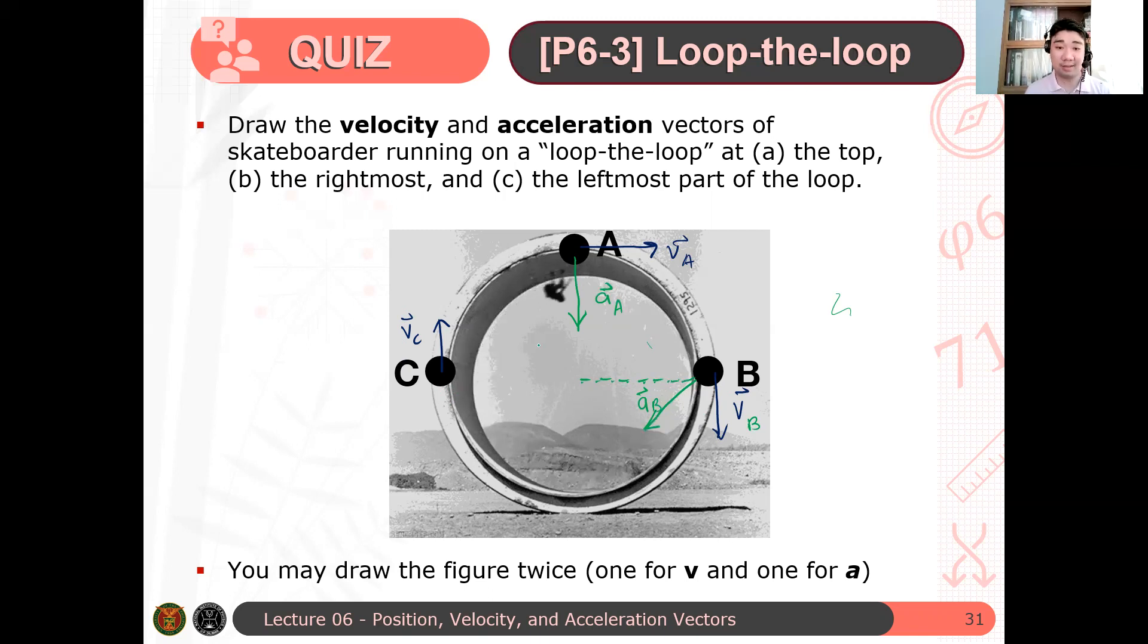What about the velocity at point C? Remember? It slows down upward. So therefore, ano yung magiging component dapat ng acceleration sa direction ng velocity?